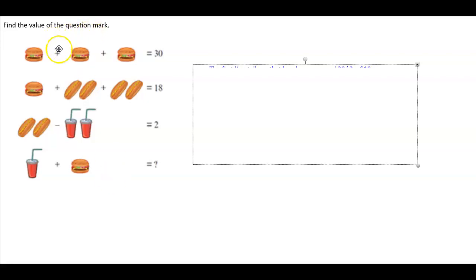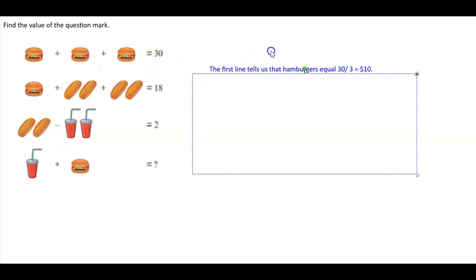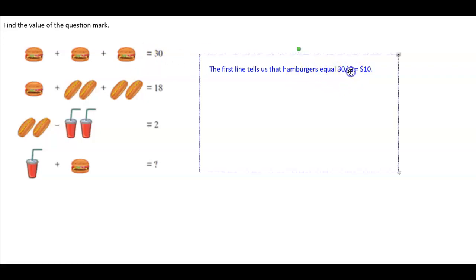Find the value of the question mark. Here we have three hamburgers when you add them together it gives you $30. So the first line tells us that hamburgers equal 30 divided by 3, which means that it's $10 each.